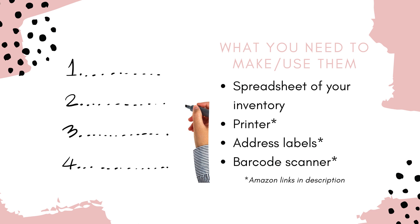What you need to make and use these barcodes is a spreadsheet of your inventory. If you don't have one right now, you can definitely still benefit from this video, but definitely consider making an inventory management system. What I've done is take my Poshmark inventory report, download it, and add SKU numbers — I would recommend using SKU numbers. You'll also need a printer, some address labels — I'll have some linked in the description — and a barcode scanner so that you can utilize your barcodes.